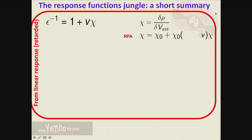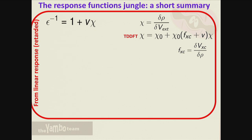Also, you can obtain chi in time-dependent density functional theory if you include the exchange-correlation term, which is the derivative of the exchange-correlation functional potential with respect to the density.